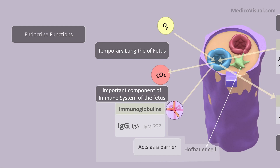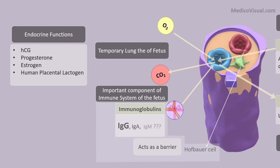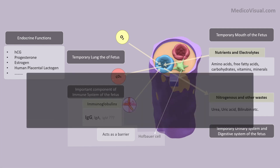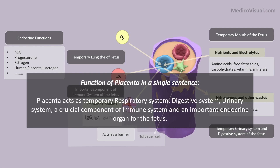Along with that, as previously discussed, there are endocrine functions of placenta as well — the production of HCG, progesterone, estrogen, and human placental lactogen. There are some other hormones produced by the placenta but we will not discuss those as details are not clearly known. So, here is the review: placenta has a role in exchange of gases, provision of nutrients, excretion of nitrogenous waste, immune system functions, and endocrine functions. In a single sentence, placenta acts as a temporary respiratory system, digestive system, urinary system, a crucial component of the immune system, and an important endocrine organ of the fetus.